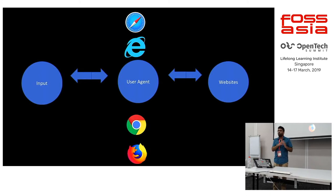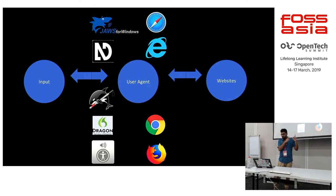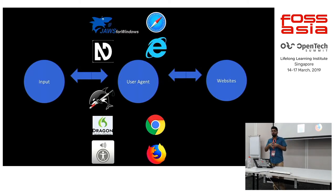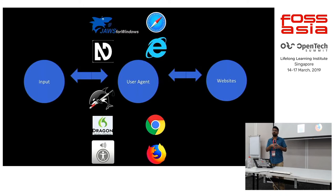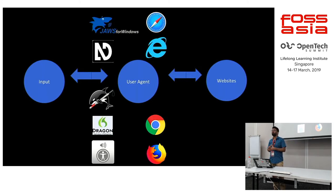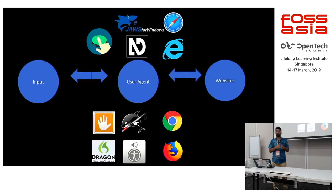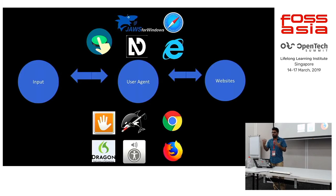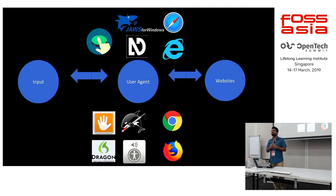These user agents also include screen readers, which are used by disabled people. Disabled people are not aware of which browser is being used — they are more aware of how the website reacts to their screen reader. If your website has a very good user experience but is not accessible to a screen reader, it is of no use for a low vision or blind person. There are also magnifiers as user agents — people with low vision use magnifiers. So when we design, we need to think about browsers, screen readers, magnifiers, and other devices such as mouth sticks and headbands.